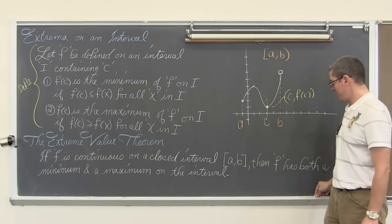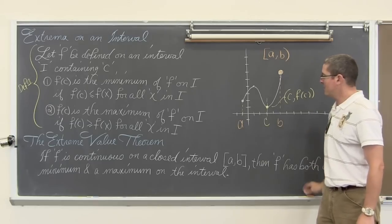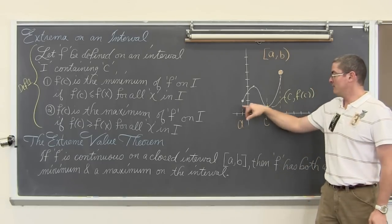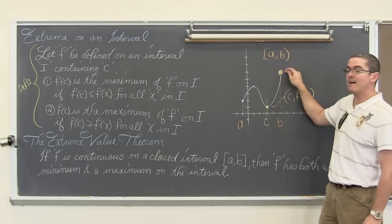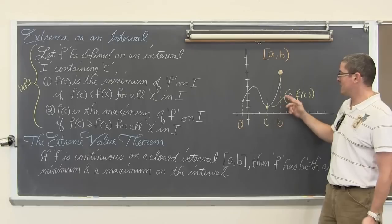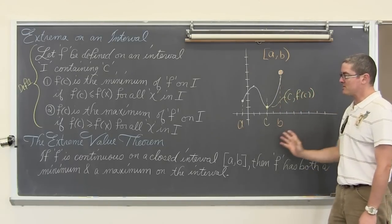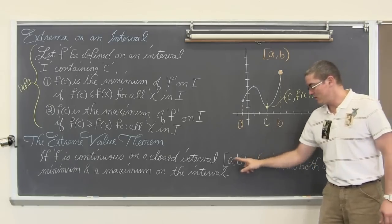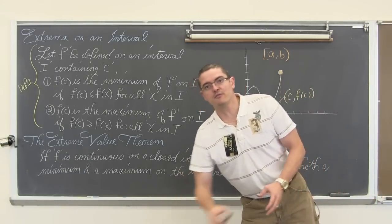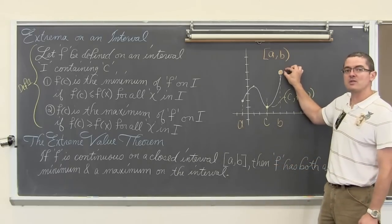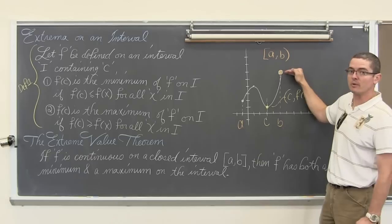Now if I come in and fill in that dot, then I have a minimum again of 1 at the x value of 3, and I have an absolute maximum at a maximum value of 5 at an x value of 6. For the extreme value theorem, you do need that closed interval because of our ability to infinitely approach a value and thus always be able to get a little bit larger and a little bit larger and so on.